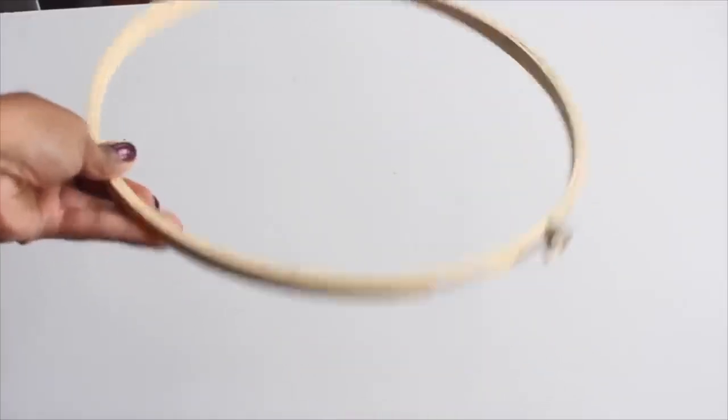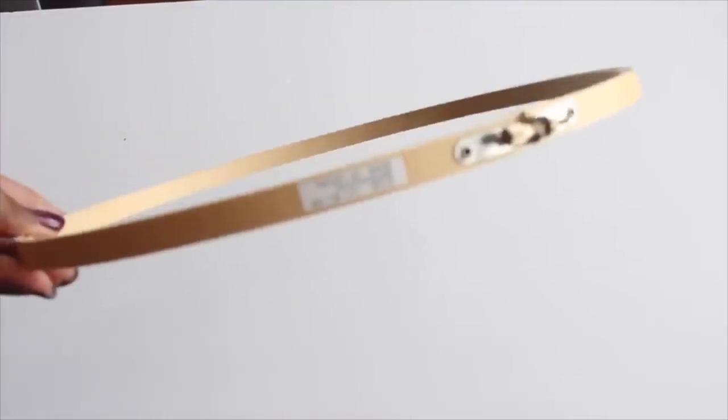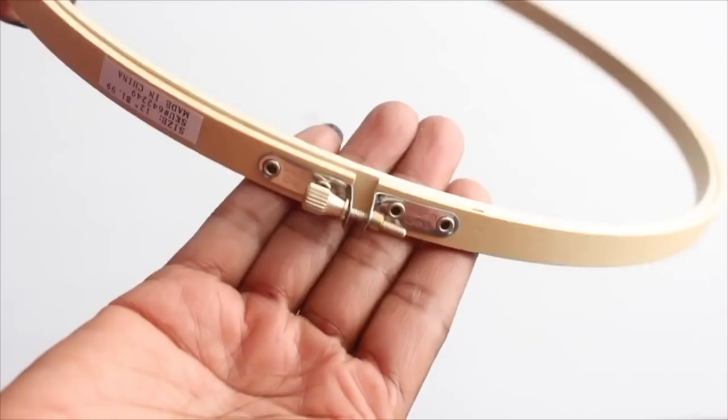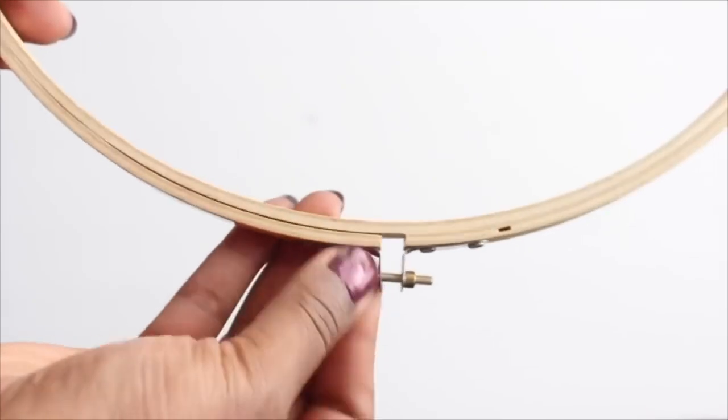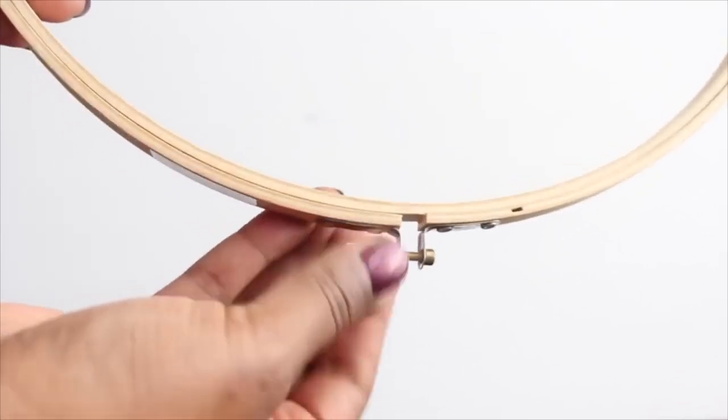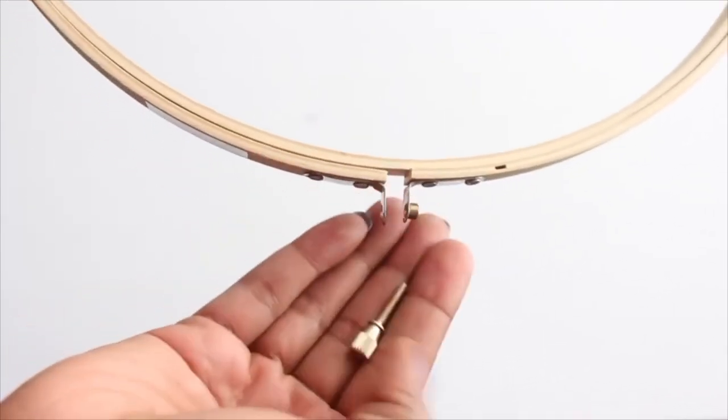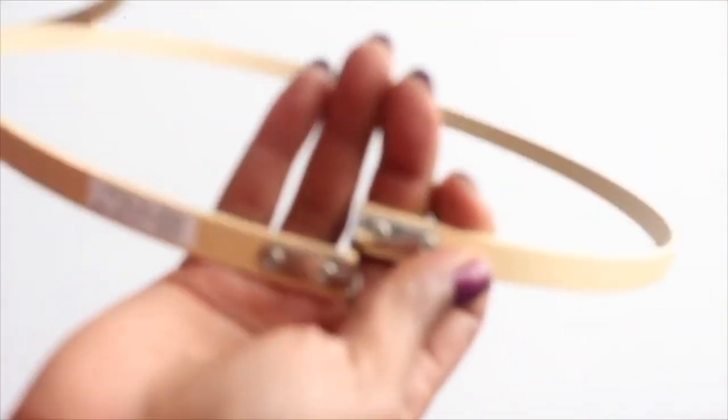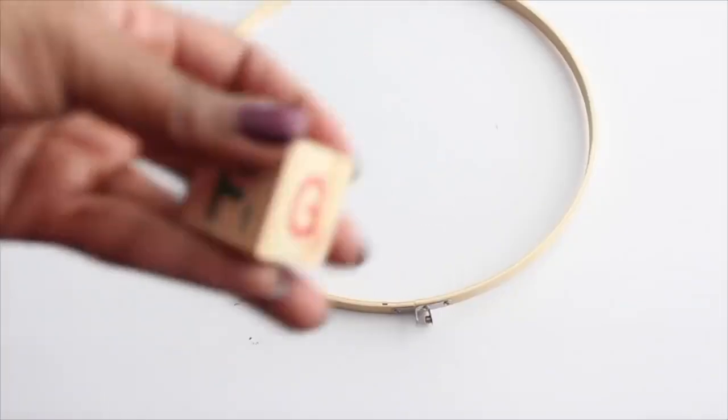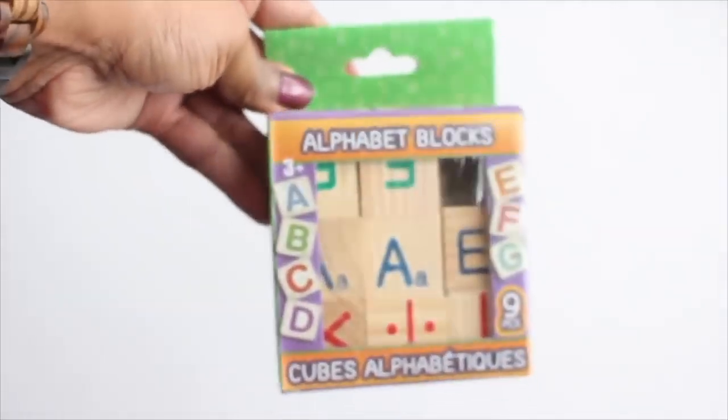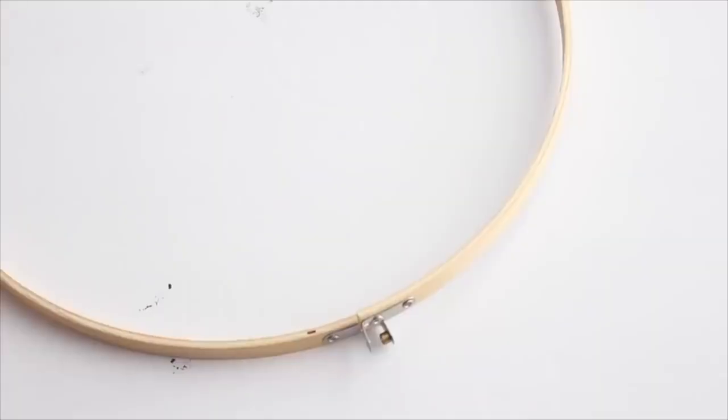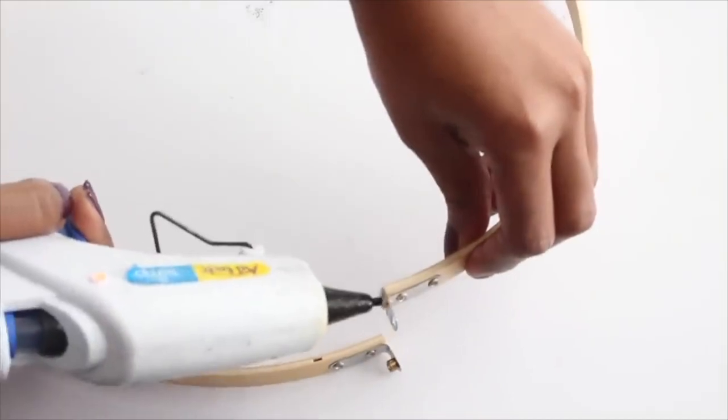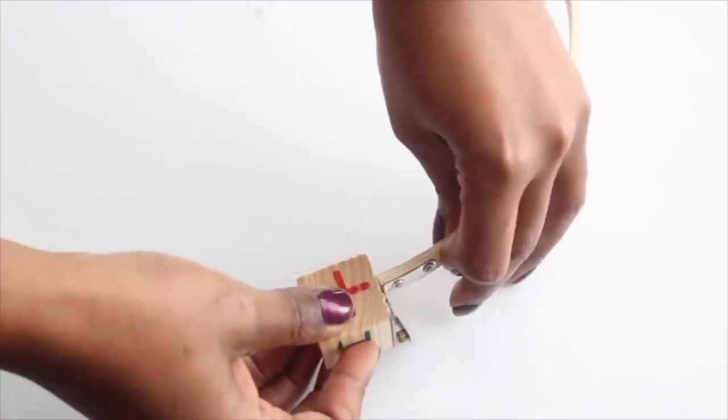I purchased this 12 inch embroidery hoop from Hobby Lobby for $1.99. The first thing that I did was completely unscrew the outer hoop and separate them. I only want to use the outer one. Next I'm going to take one of the blocks from a pack that I purchased from the Dollar Tree a while back. And then I'm going to hot glue each of the embroidery hoop ends to the block.